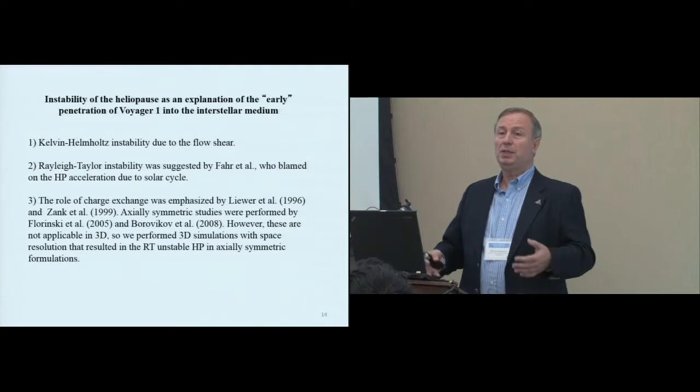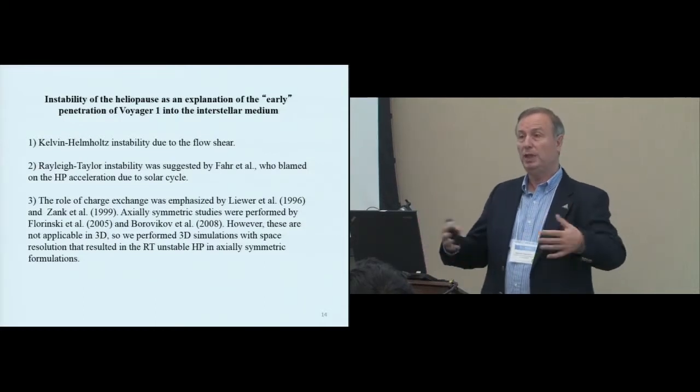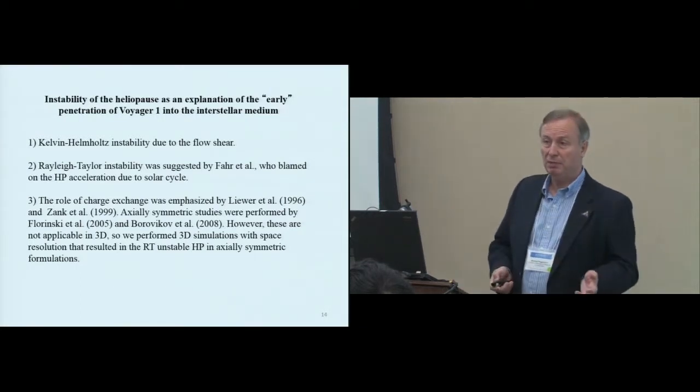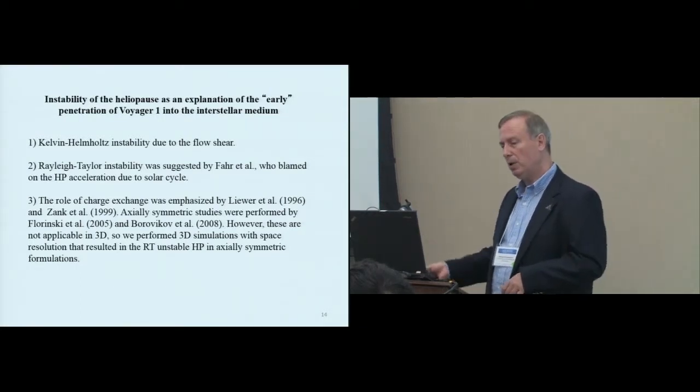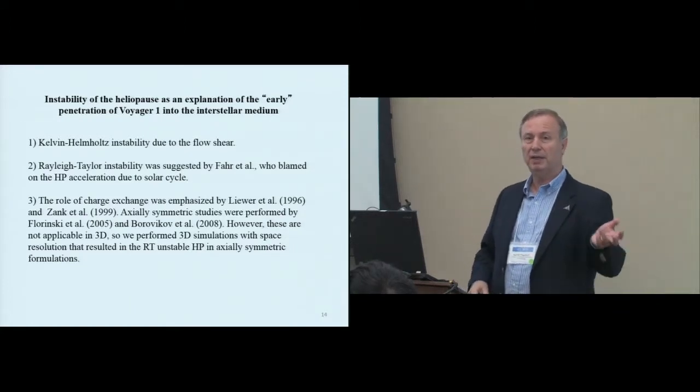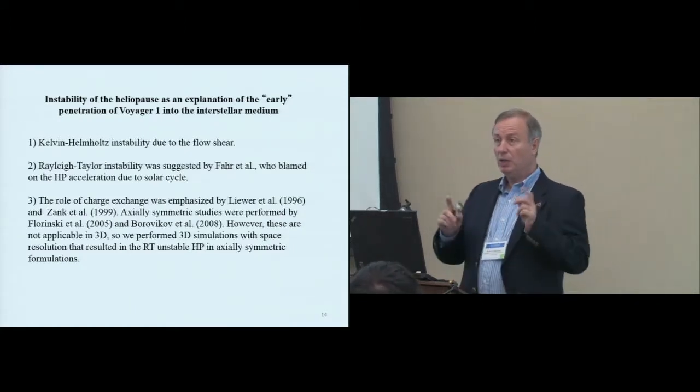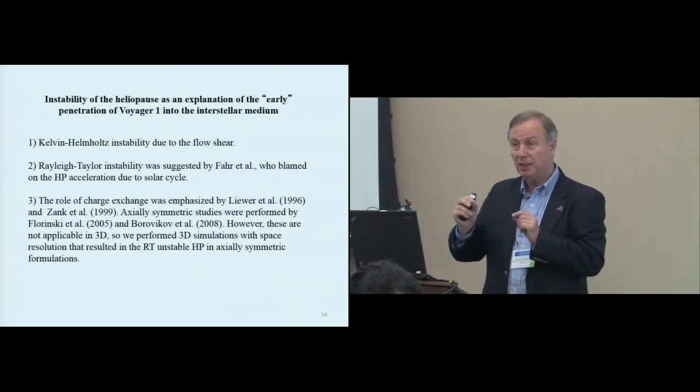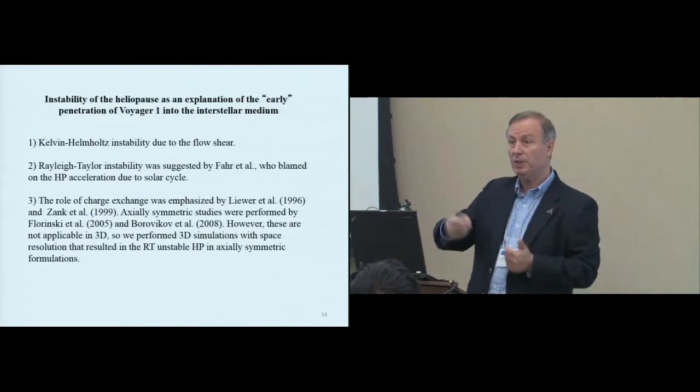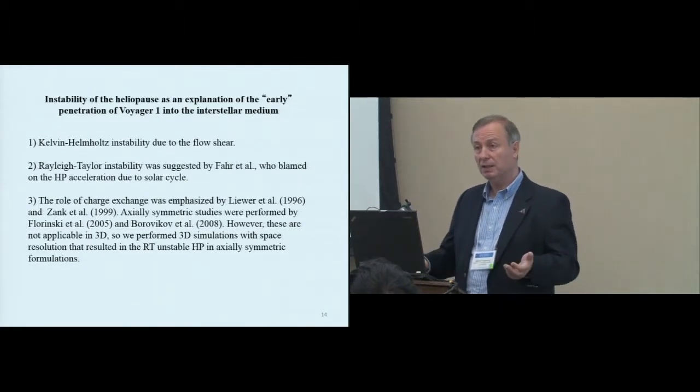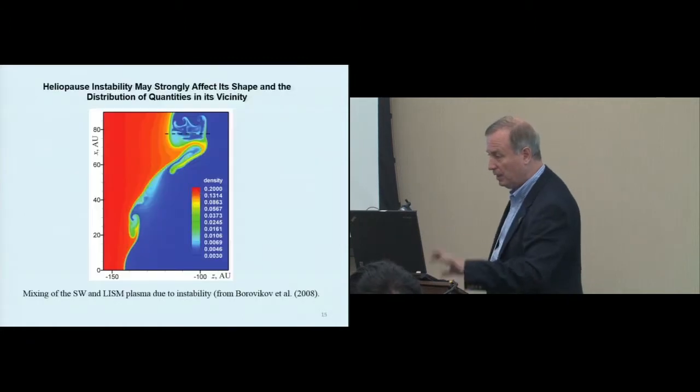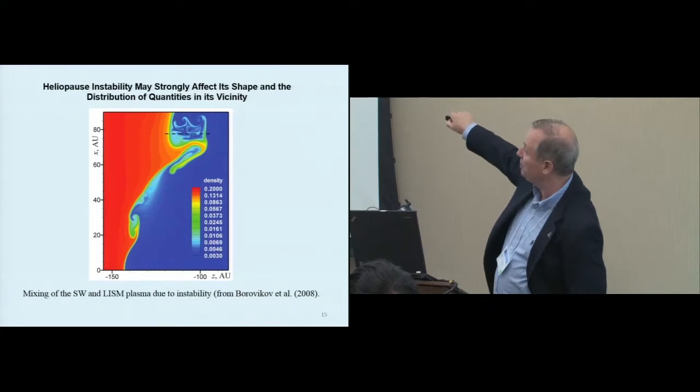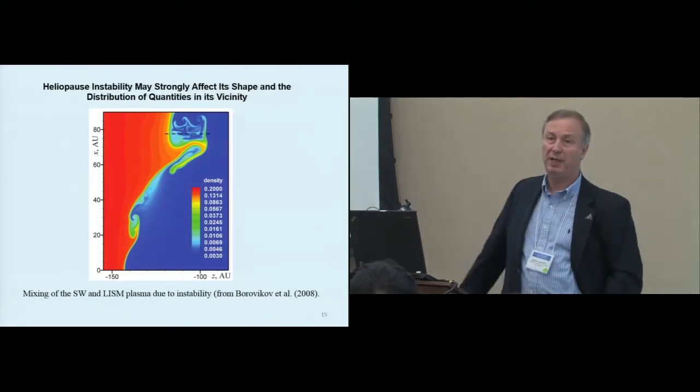First of all, why should we expect that the heliopause is tangential discontinuity, a smooth one? It's not. There are plenty of different types of instabilities over there. Kelvin-Helmholtz, negative energy instability, Rayleigh-Taylor instability caused by charge exchange, not by gravity, but caused by charge exchange. This is axially symmetric simulation, the one which I showed you previously. And you see that the heliopause is just very smooth.